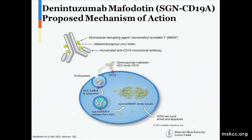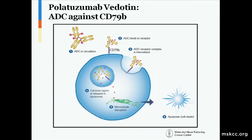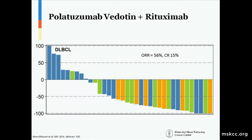One other promising new drug in the class of antibody-drug conjugates is polatuzumab vedotin. Similar to brentuximab vedotin, this is the MMAE warhead attached to an antibody recognizing CD79B. The waterfall plot for this drug looks quite promising — an overall response rate of 56% in diffuse large B-cell lymphoma. A trial is underway combining polatuzumab with bendamustine and either rituximab or obinutuzumab. I'll stop there so we can hopefully catch up. Thanks.